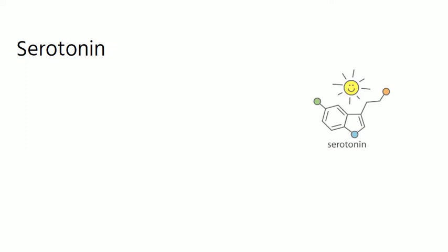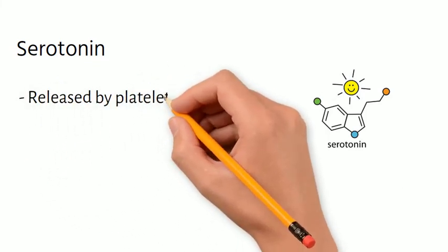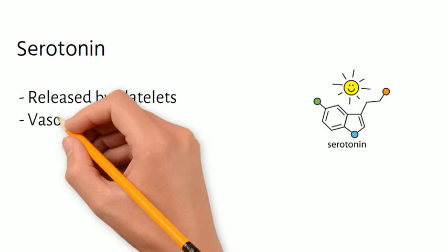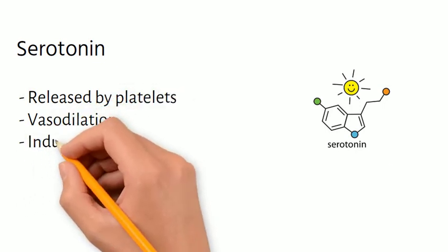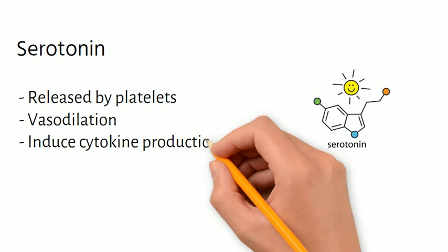We usually think of serotonin as a hormone that works in the brain to regulate mood, happiness, and anxiety, among other things. But during inflammation, serotonin is released by platelets, leading to vasodilation and increased cytokine production.